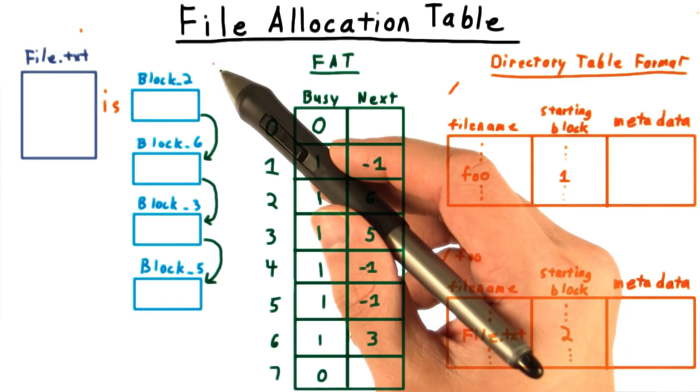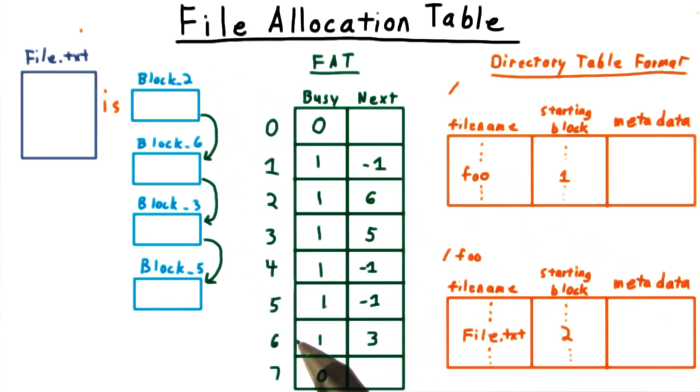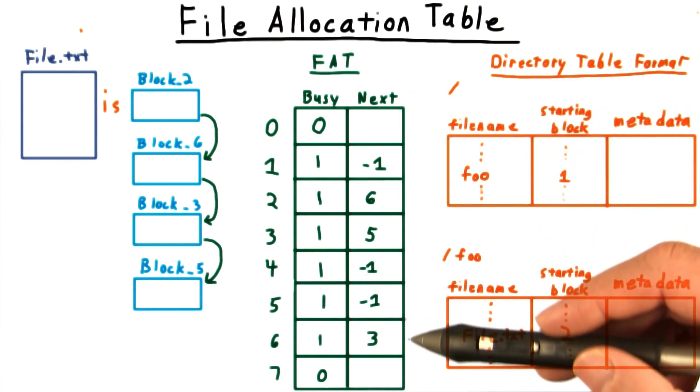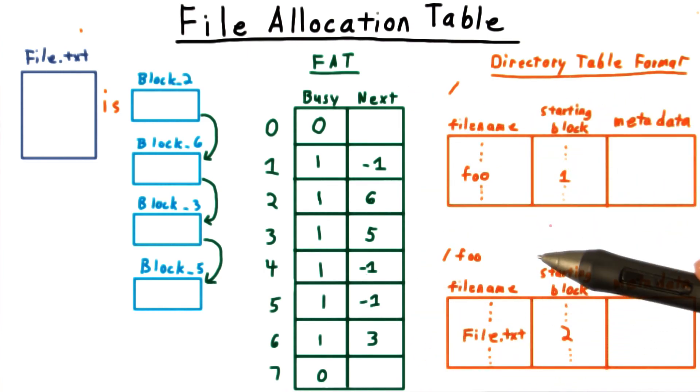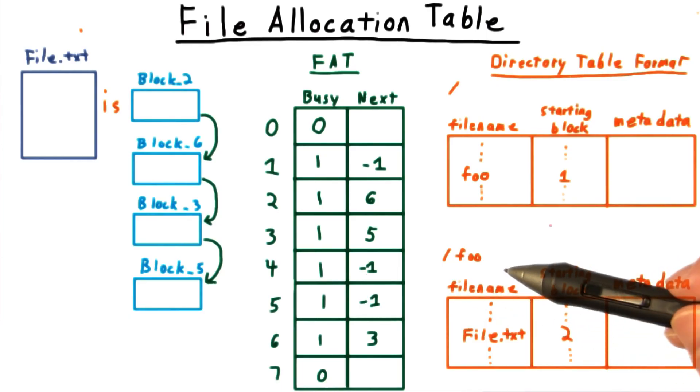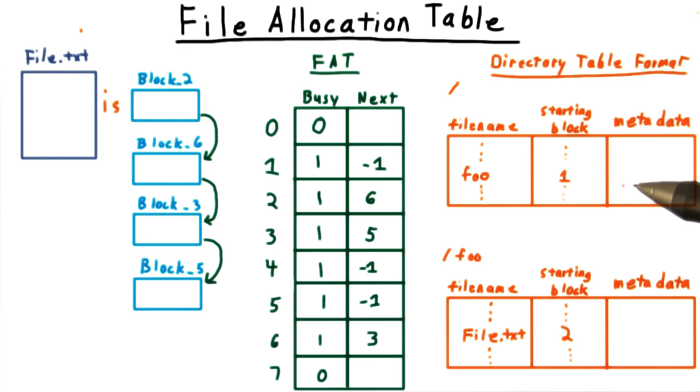I can then chain together the blocks on disk, as we did earlier, using the file allocation table. To summarize, the FAT or file allocation table serves as the glue that chains the blocks of a file together. The directory files capture the hierarchy and the starting blocks for the files, and all the metadata.